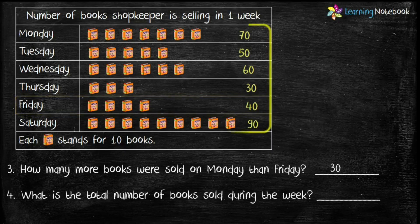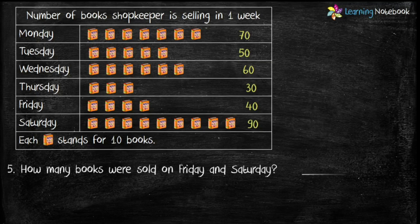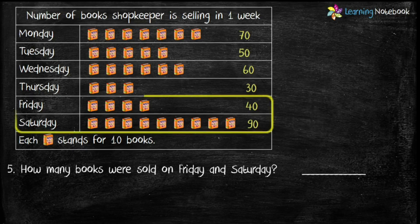Question 4: What is the total number of books sold during the week? Let's add all the numbers: 70, 50, 60, 30, 40, and 90. We get the answer as 340. Question 5: How many books were sold on Friday and Saturday? Books sold on Friday is 40 and on Saturday is 90. Adding both: 40 plus 90 equals 130.